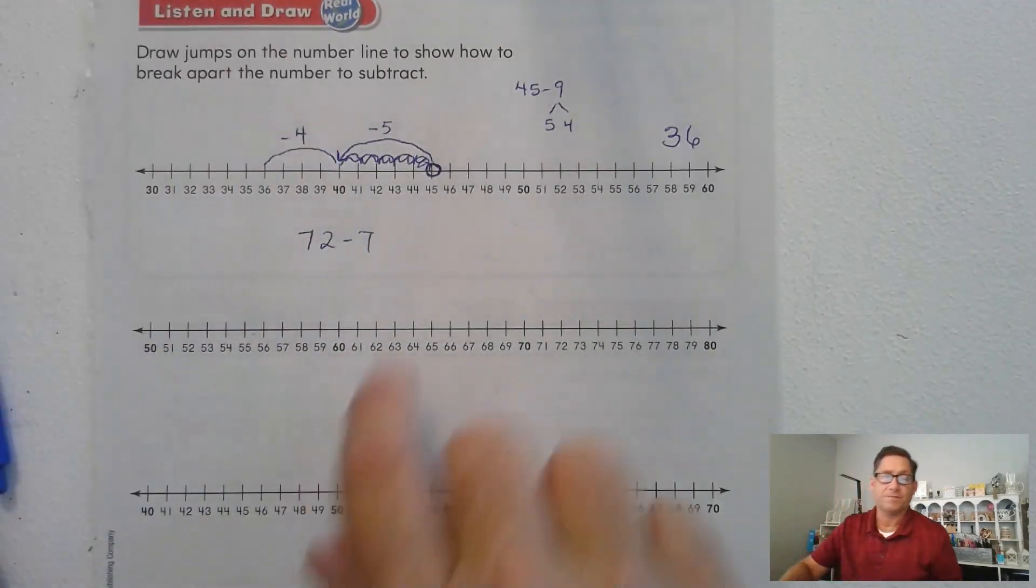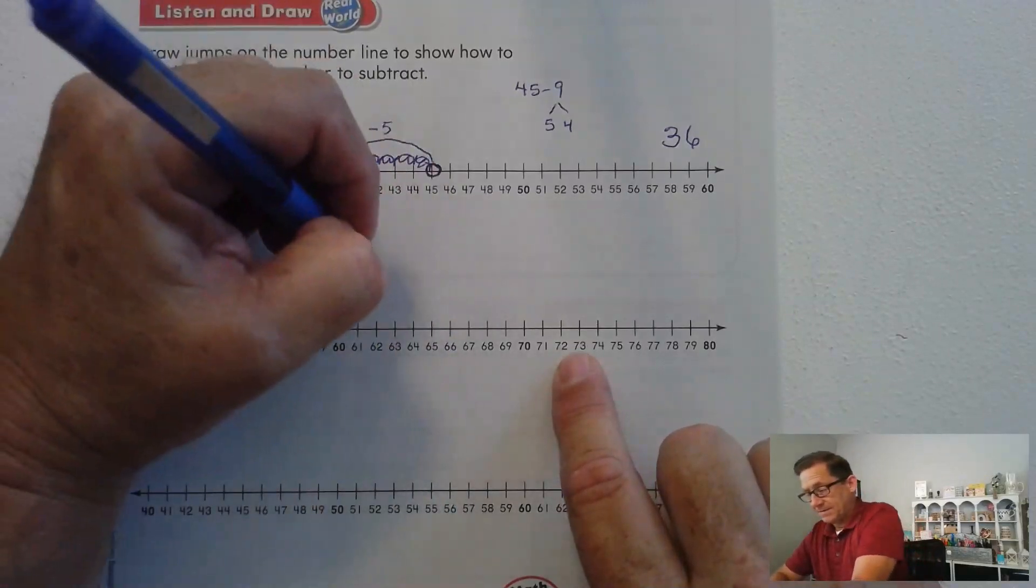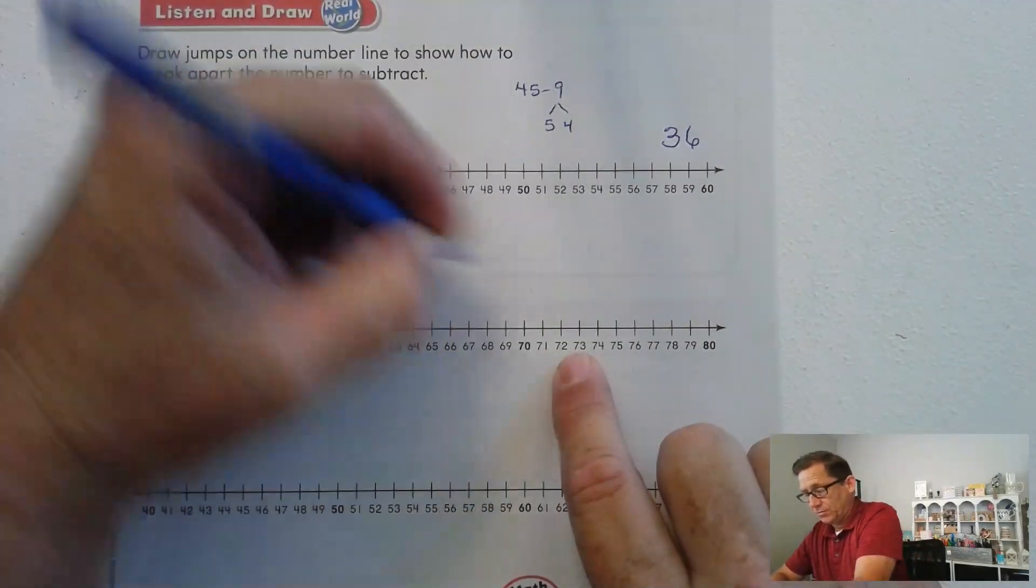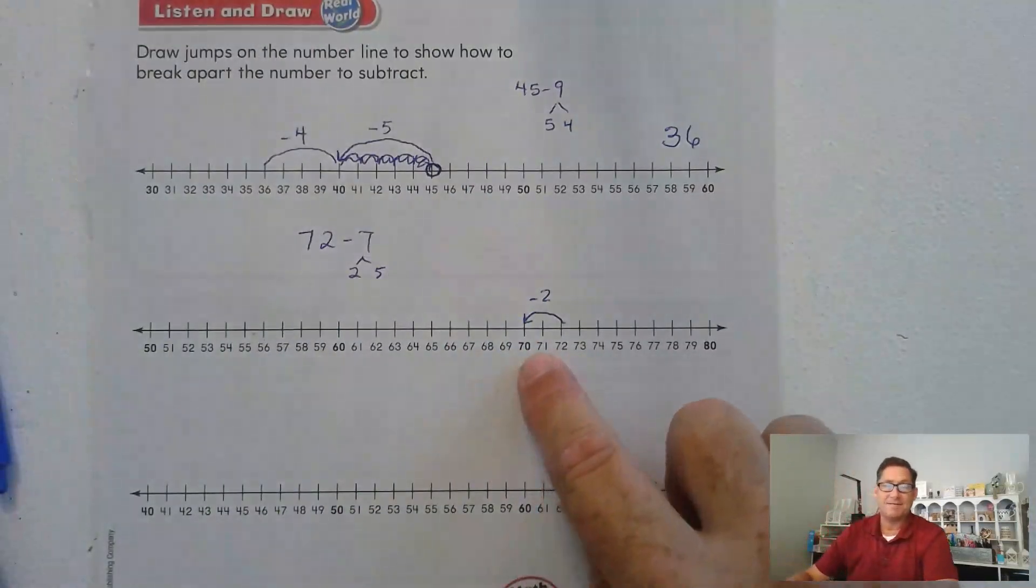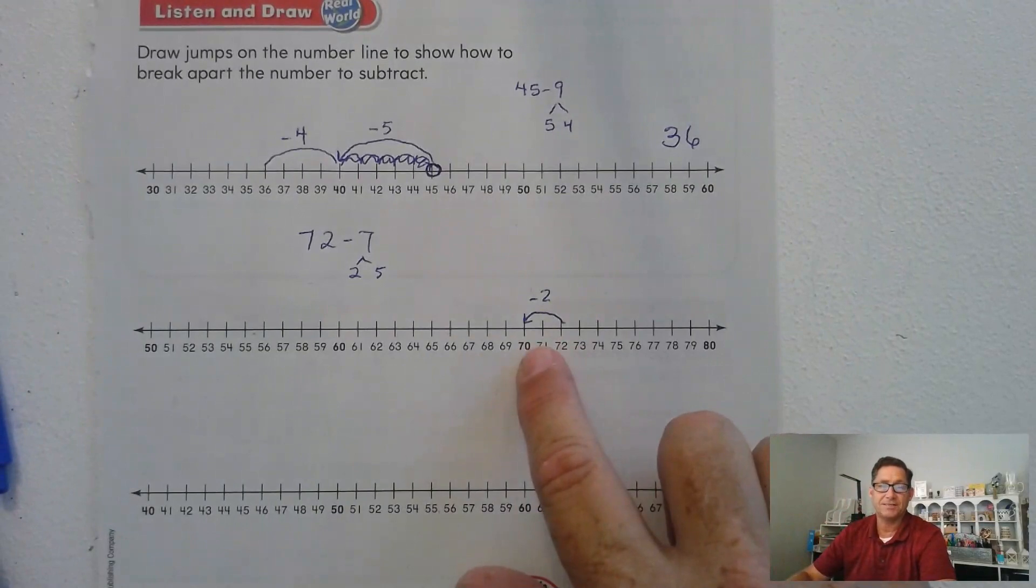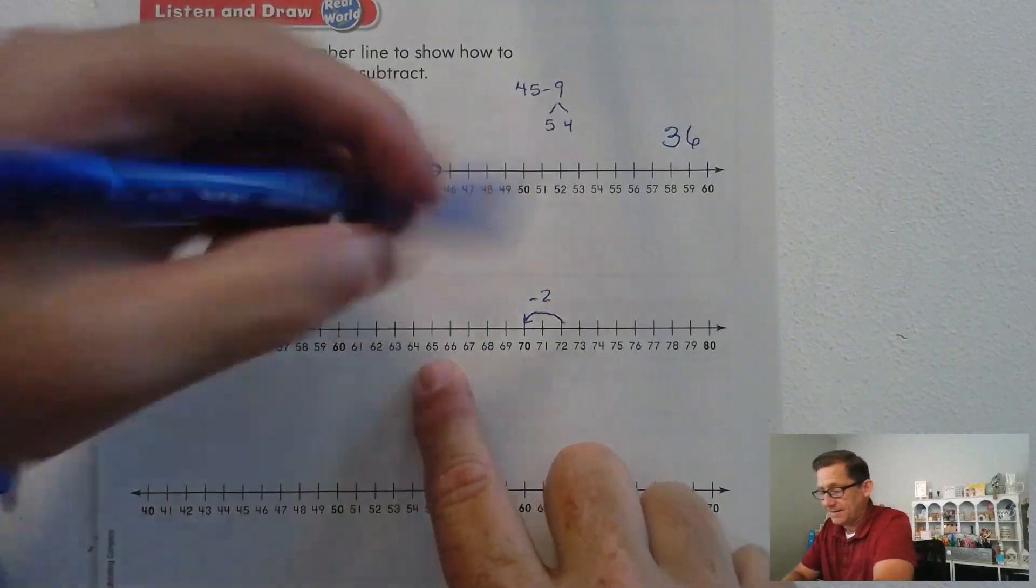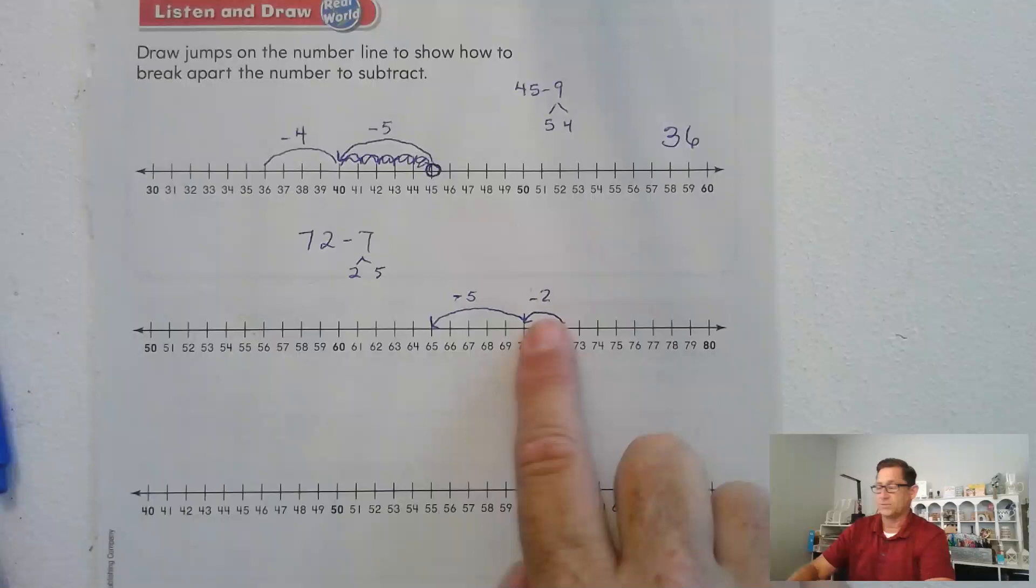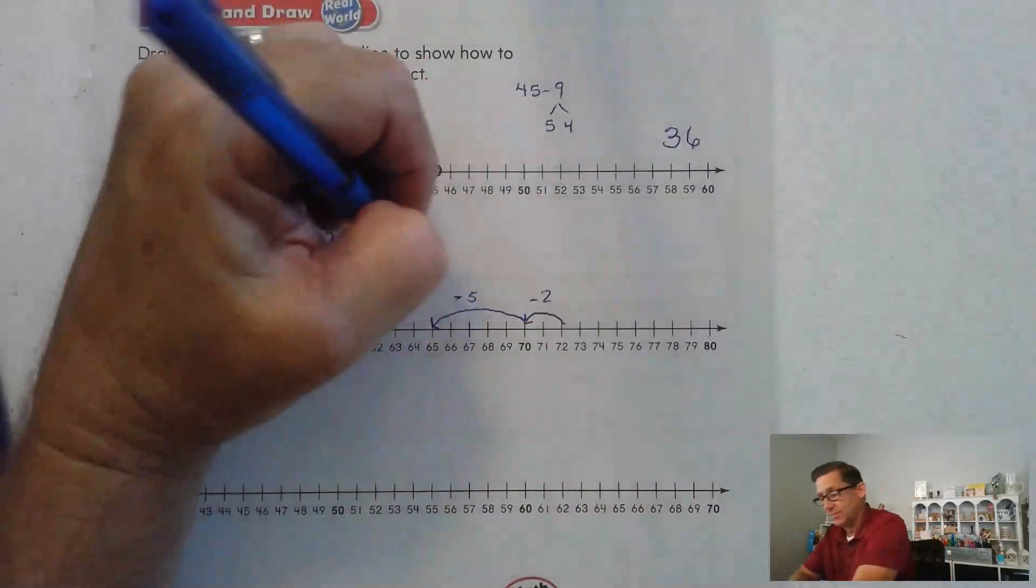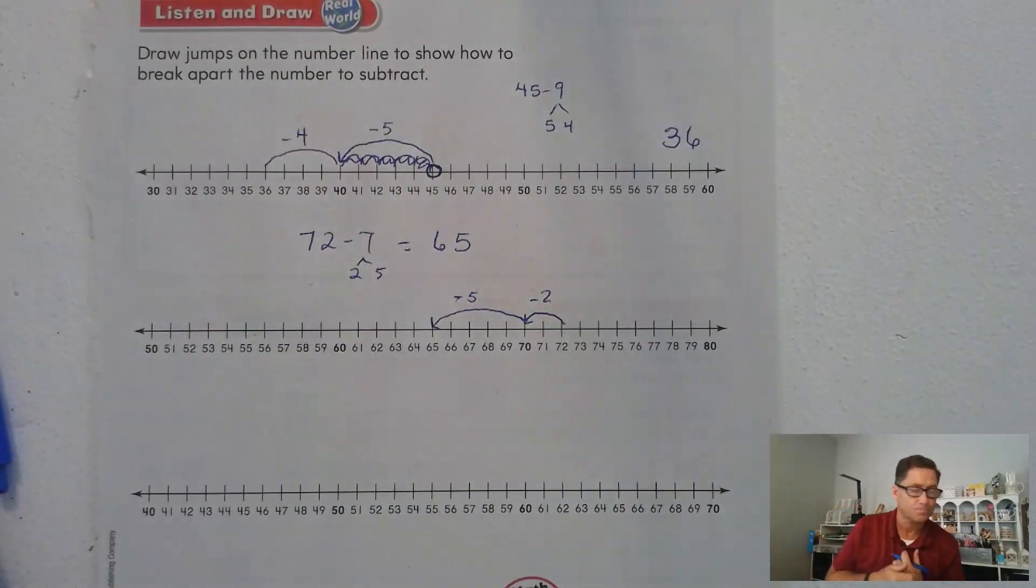Is this what you came up with? 72 minus 7. Well, I'm at 72. I know that if I subtract 2, I'd be at 70. 72 minus 2 is 70. Now if I subtract 5: 1, 2, 3, 4, 5, I'd be at 65. And we're subtracting 7. So 72 minus 7 is 65.